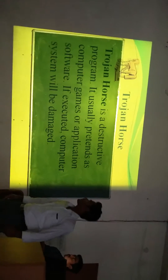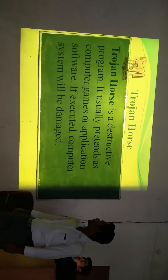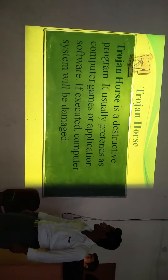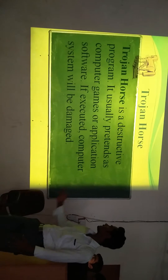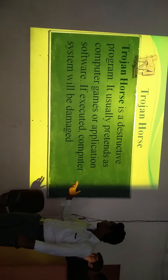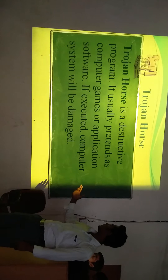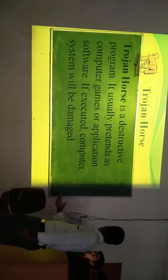The next type is Trojans. A Trojan is a destructive program that usually disguises itself as coupled to games and applications. The software appears legitimate but once executed, it compromises the system.